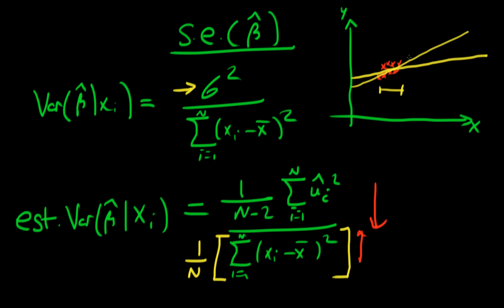If my x were ranging over a much bigger range than before, I'm much more confident in drawing my line of best fit. As a result, the estimated variance in beta hat will fall. That's the intuition behind the denominator.